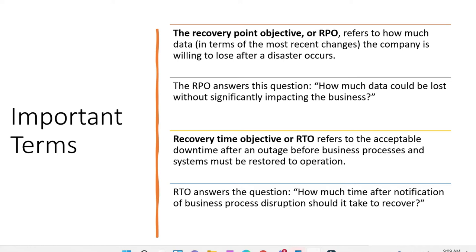The second term is RTO — Recovery Time Objective — which means what is the acceptable downtime for an outage. For example, the RTO can be two hours, meaning we are okay to live with a downtime of two hours, and by that time we will ensure the secondary setup comes up and becomes primary. RTO answers the question: how much time after notification of a business process disruption should it take to recover?